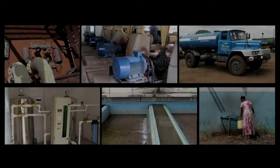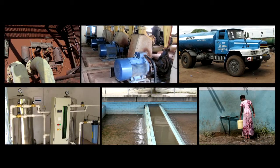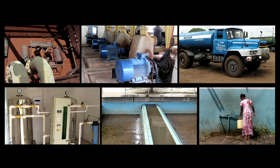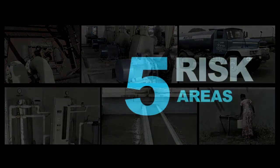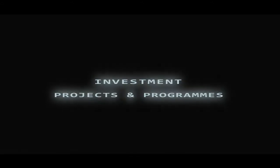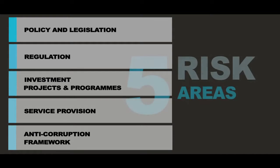Water corruption is hard to catch as it can happen at any point along the water development and delivery chain. The AWIS therefore looks at five main risk areas: policy and legislation, regulation, investment projects and programs, service provision, and the anti-corruption framework that is in place. In all countries, these five areas are relevant for water integrity.